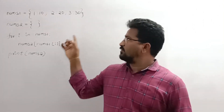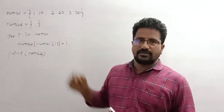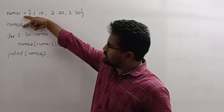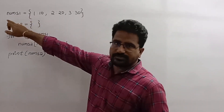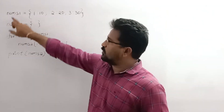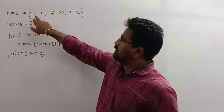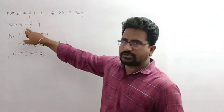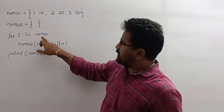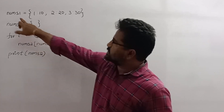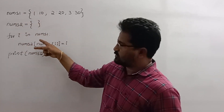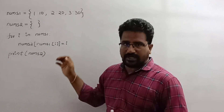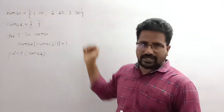Now I will explain the program. In this program there are two dictionaries: nums1 and nums2. In nums1, some key-value pairs are there. In nums2, an empty dictionary is there. On the nums1 dictionary, we applied a for loop and some expression is there. The same program will be explained through the iterations.